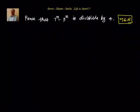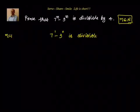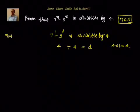Now, we have done so many problems like this, so we will try to finish this in a fast way. First, we have to prove n equal to 1 — the statement is true. Put n equal to 1: 7 power 1 minus 3 power 1 is 4, and 4 is divisible by 4 because 4 divided by 4 equals 1.